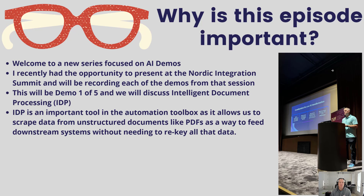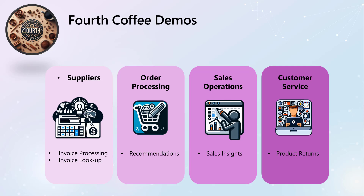IDP is an important tool in the automation toolbox. It allows you to intelligently scrape documents such as PDFs, extract key data from those documents, and use that data to feed downstream systems. Usually the alternative is that someone has to manually keyboard this data into the system that needs it. Using this approach allows for a lot of efficiency for organizations.